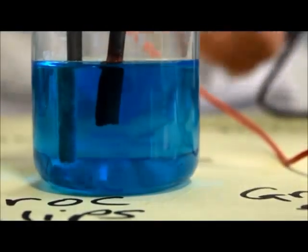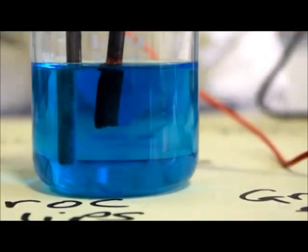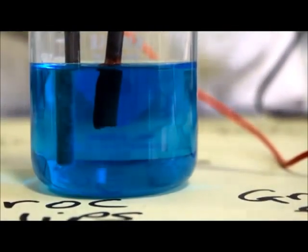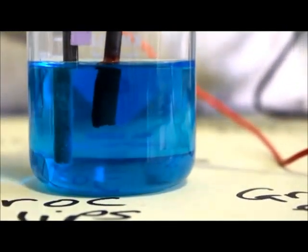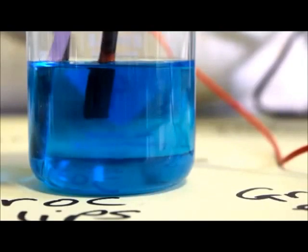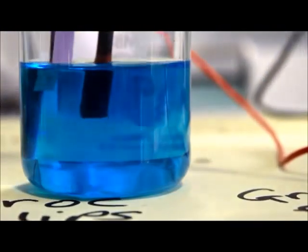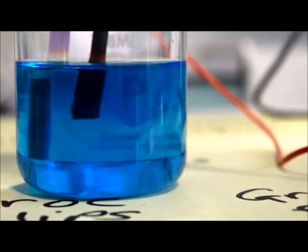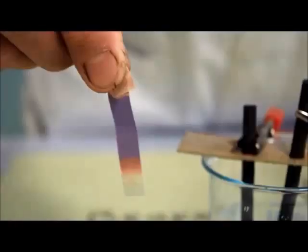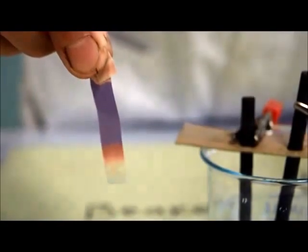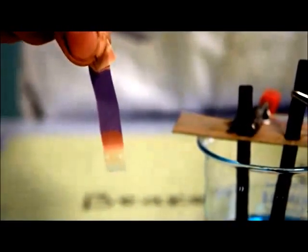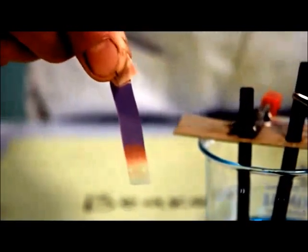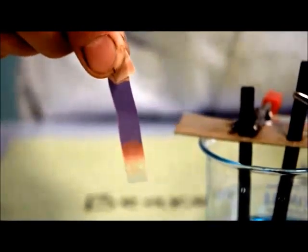When you turn this on, you will see bubbles forming at the positive electrode. If you lower blue litmus paper next to the bubbles—make sure you're going under the solution—the litmus turns white. You can see the litmus paper has turned white, and that's because the electrode has produced chlorine gas.